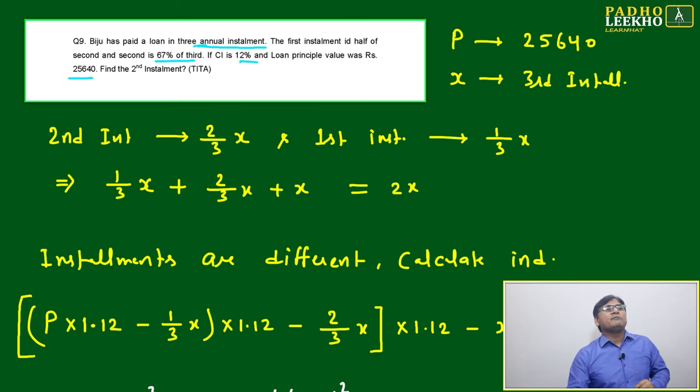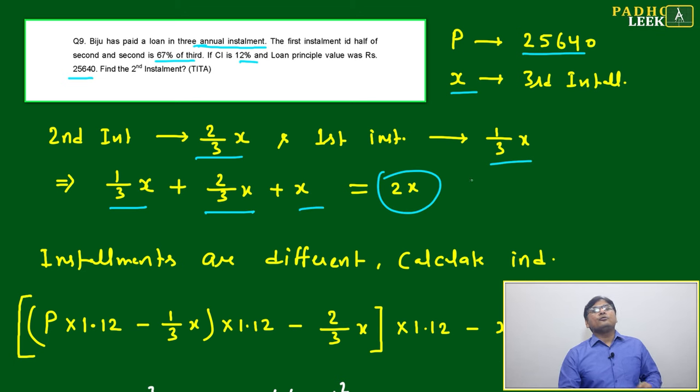The principal amount is given as 25,640. Just suppose X is your third installment, then the second installment will become 2/3 X, and the first installment becomes 1/3 X. Then you just write 1/3 X, 2/3 X. Total you have to pay 2X. What is X? X is your third installment.